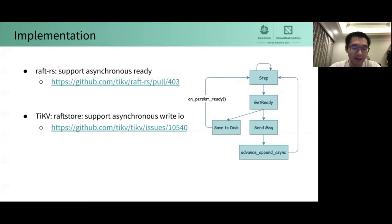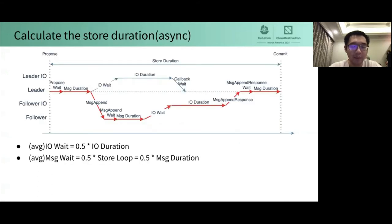Next, let's calculate the new store duration of the asynchronous version. In this sequence diagram, the leader IO and follower IO are added to indicate the IO threads. IO wait means a waiting time of an IO request. Based on the assumption mentioned before, IO wait is equal to half of IO duration. Since the store threads only process message and don't need to wait for IO, the store loop duration becomes a message duration. Therefore, message wait is equal to half of message duration.